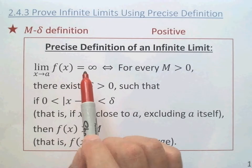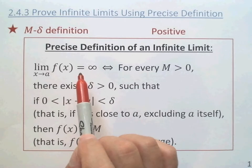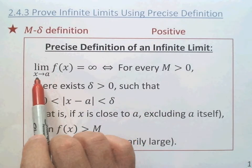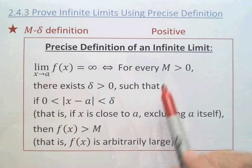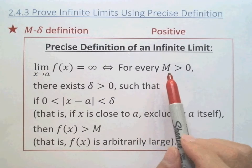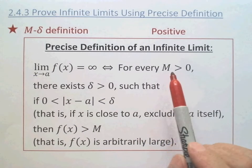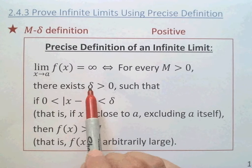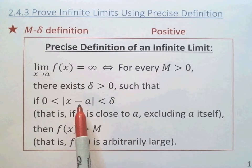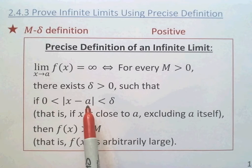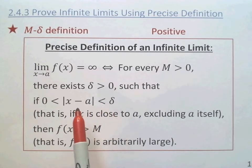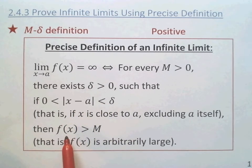Do you remember the intuitive definition? We can make F arbitrarily large by taking x sufficiently close to A. In M-delta language: for any number M greater than zero, no matter how large M is, we can always find a delta greater than zero such that as x is sufficiently close to A — going into the delta neighborhood of A — we see F is arbitrarily large, or F is greater than any number M.